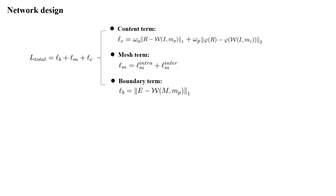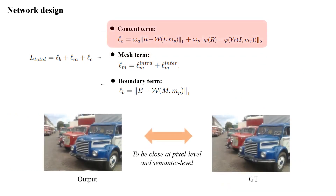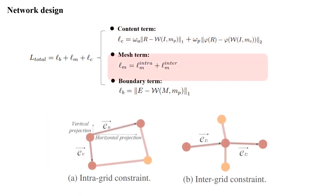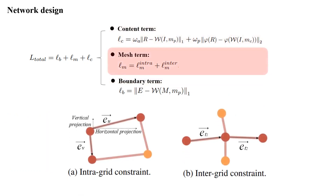For the objective function, we design three terms. For the content term, we encourage the output to be close to the ground truth both at pixel level and semantic level. For the mesh term, we design intra-grid and inter-grid constraints to reduce warping distortions. In the former, we limit the size of a grid to avoid dramatic scaling. In the latter, we enforce the neighboring grids to transform constraints.